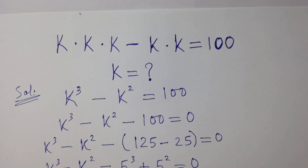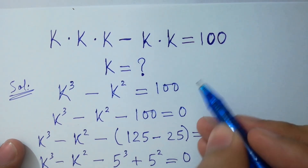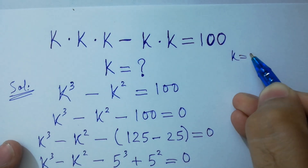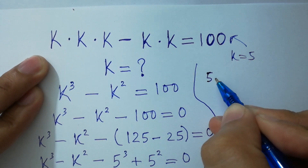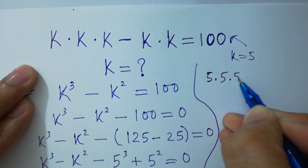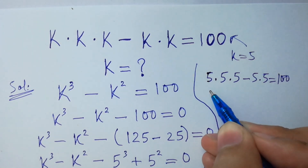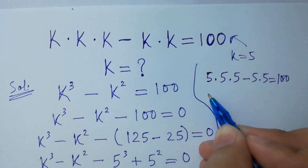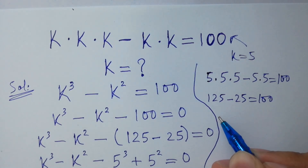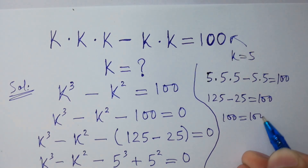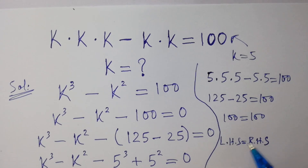Now let's verify. We check that k times k times k minus k times k equals 100 by putting k equals 5 into the equation. We get 5 times 5 times 5 minus 5 times 5 equals 125 minus 25, which equals 100. Left hand side equals right hand side, so k equals 5 satisfies the equation.